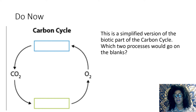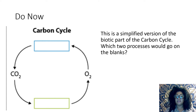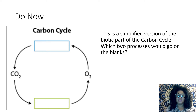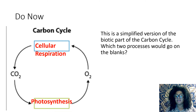So let's start with the do now. What you had to do was label each box depending on the process. This is a simplified version of the biotic part of the carbon cycle — which two processes would go in the blanks? In the blue box, we see that oxygen is going in and carbon dioxide is going out, so we know that process is cellular respiration. For the green box, carbon dioxide is going in and oxygen is going out, so that is photosynthesis. These are two of the biotic parts of the carbon cycle.